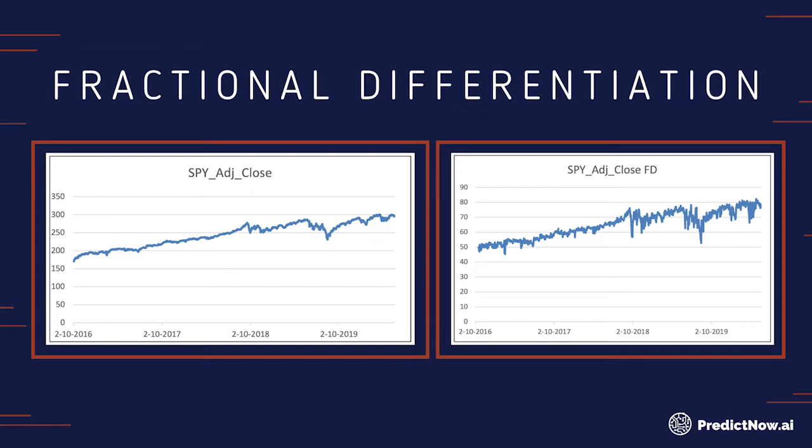After we apply fractional differentiation, you can see that the time series looks like this. Look at the bottom chart. It still resembles and has picked up some of the characteristics of the original series, but the range of the increase is much smaller. And if you apply the usual time series test, such as the ADF test, you will find that this time series is now, in fact, stationary.